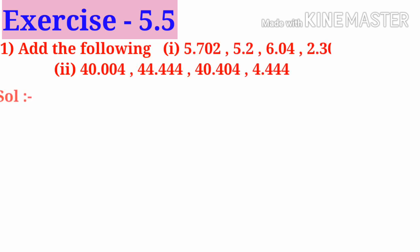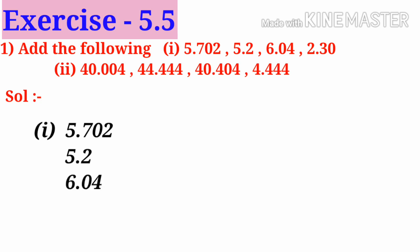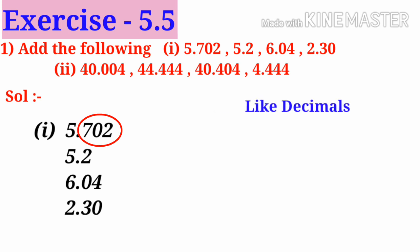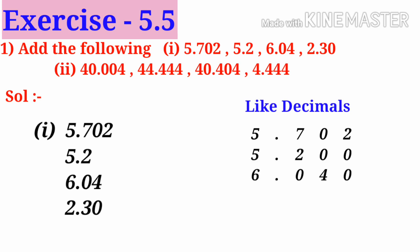Add the following. Solution, number 1: 5.702, 5.2, 6.04, and 2.30. To add these decimals, observe that the maximum decimal places is 3. So to convert them into like decimals, add two zeros to the second decimal fraction and one zero to the third and fourth decimal fractions.